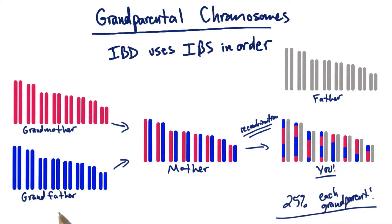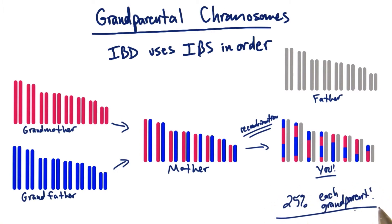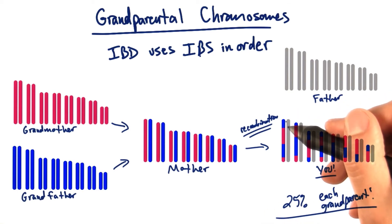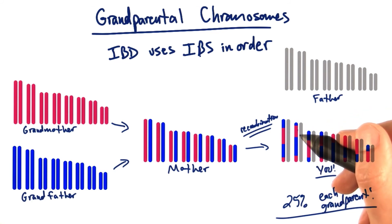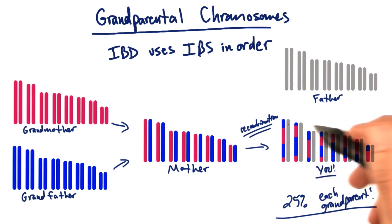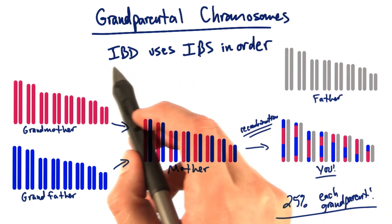If you and a grandparent actually participated in a service like 23andMe, you can see exactly which segments of the chromosomes you share with the grandparent, and the fact that you're roughly 25% related to each other. Although the individual sizes and chunks of the segments you may share with the grandparent can vary, roughly speaking you'll be about 25% related through IBD to a grandparent.